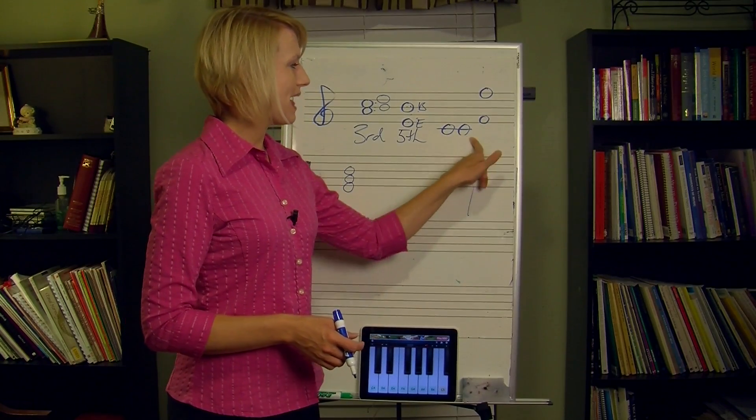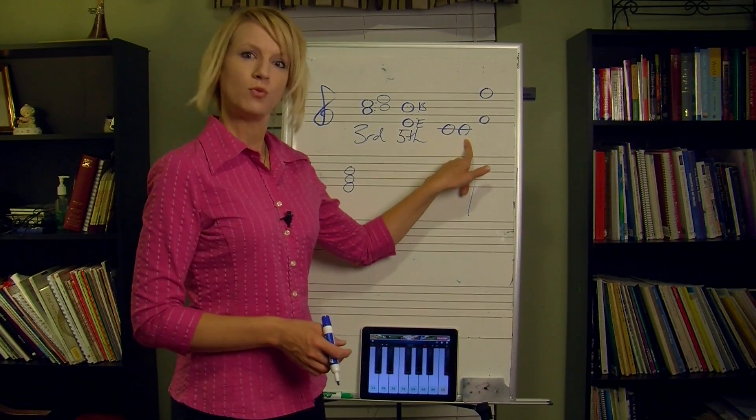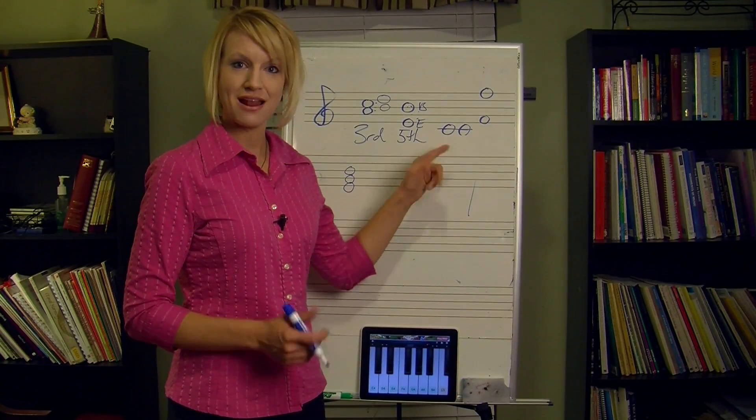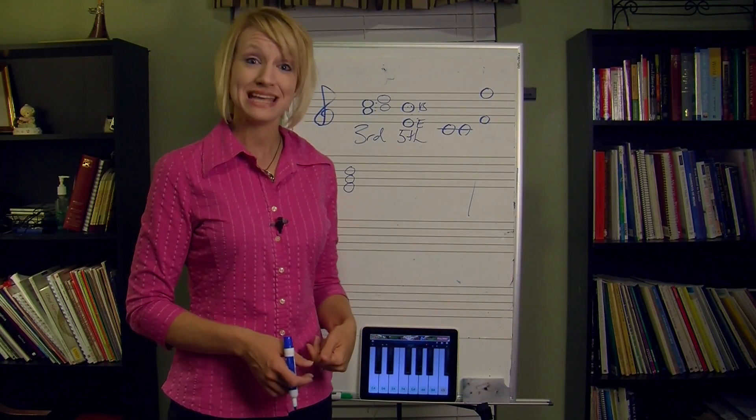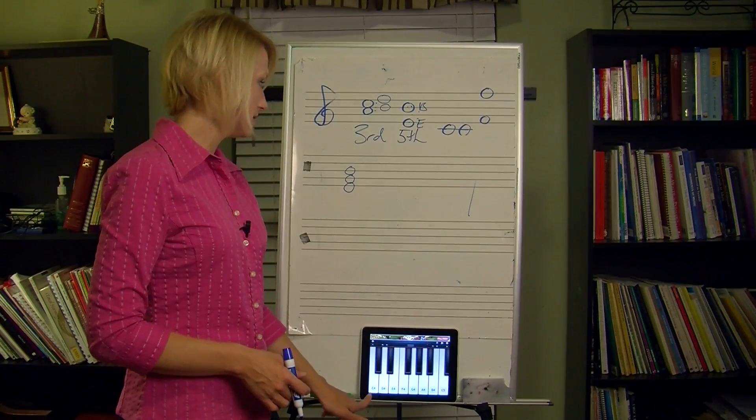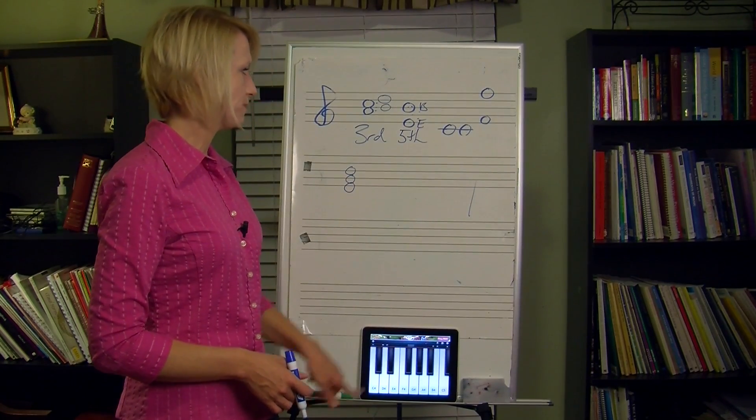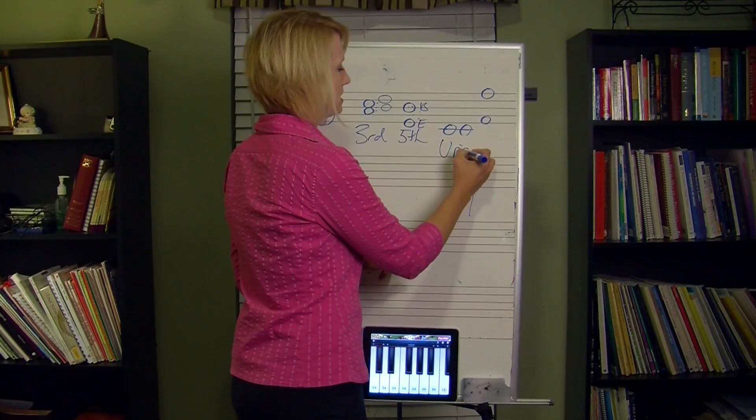So if two people had, so if one person was singing this one, one person was singing this one, or two different instruments were playing that, they're playing in unison. They're playing the same pitch on the piano. C and C. All right, so this, remember that is unison.